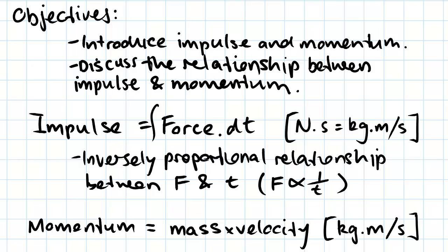This gives us the units of Newton seconds, and this is broken down into kilogram meters per second when we break it down into a mass, a length, and a time, which are our basic SI units.